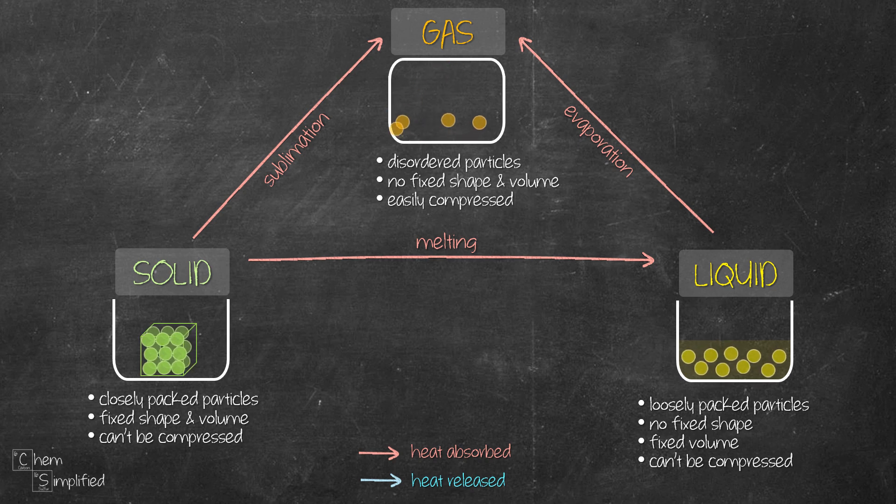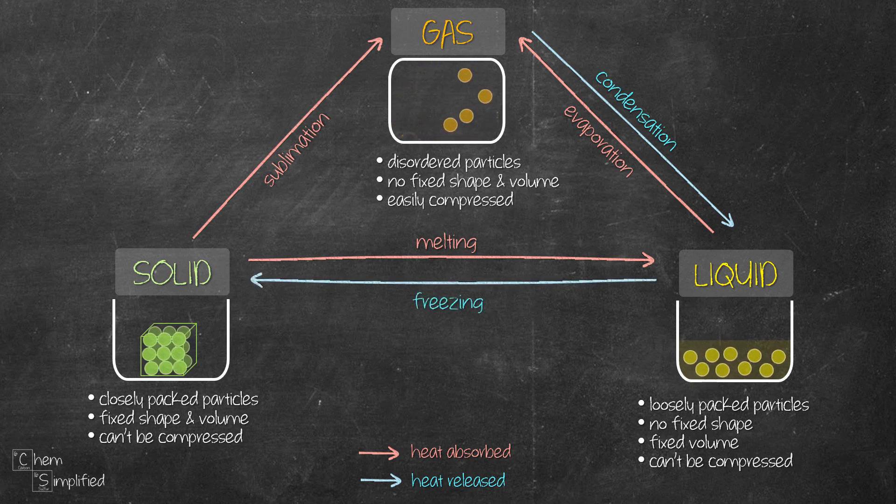Now if we do the reverse where heat is released and when gas particles release heat to the surrounding, the gas particles will undergo condensation to become liquid. That's like trapping water vapor and condensing it and we get liquid water. And when liquid particles release heat to become solid, that's called freezing. That's like taking water, putting it in the freezer, and it releases heat to the surrounding, and it becomes solid ice.